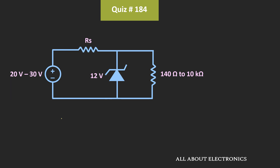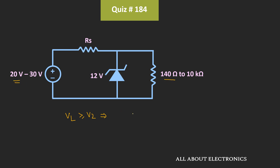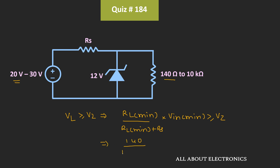We require that VL should be greater than or equal to Vz, considering the minimum load resistance and minimum input voltage. That means RL_min divided by (RL_min plus Rs) times Vin_min should be greater than or equal to Vz. Substituting values: 140 divided by (140 plus Rs) times 20V should be greater than or equal to 12V. Rearranging the terms, we find that Rs should be less than or equal to 93.3 ohm. Therefore, the maximum allowed value of Rs is 93.3 ohm.